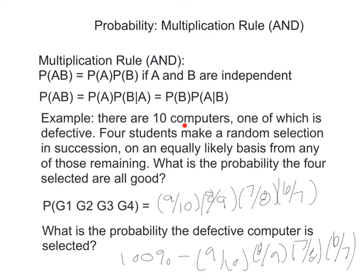We used that complement formula in the computers example: four students selecting from ten computers, one defective. We computed P(all four good) = (9/10)(8/9)(7/8)(6/7) directly. For P(defective computer is selected), instead of listing all cases for the first, second, third, or fourth student getting the defective one, we simply compute 100% minus the probability all are good.